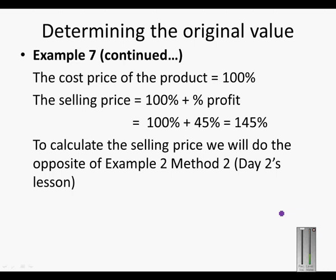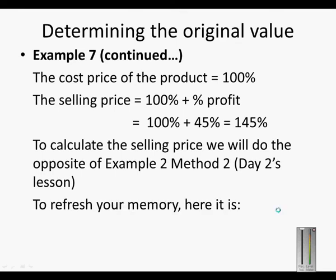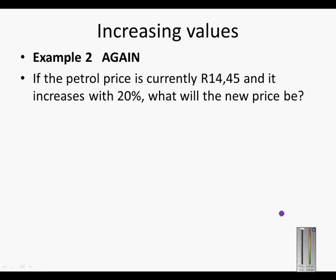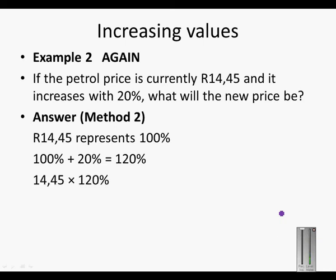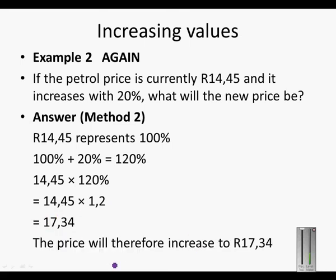To calculate the original price, we will do the opposite of what we did in Example 2, Method 2, of Day 2's lesson. In that example, petrol price increased by 20%, so the new price was 120% of the original. We took the original price and multiplied by 120%, which is 1.2, giving us 17 rand 34. So the new price was 17 rand 34.